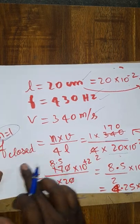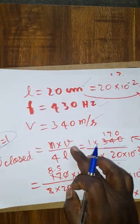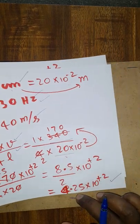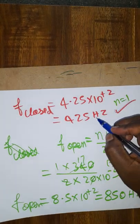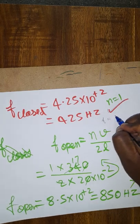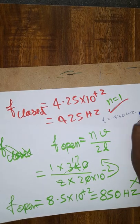So first I am going to calculate with the closed organ pipe first harmonic oscillation. Velocity we know, length we know. If I substitute, the answer I will get is 425 hertz. Frequency I will get is 425 hertz, which is given value is 430 hertz. So definitely I will get sound here.